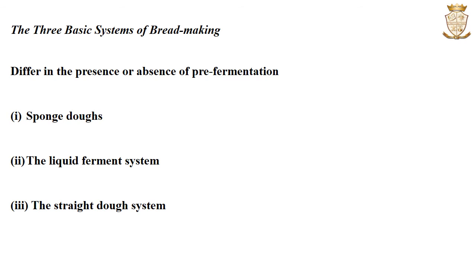Three different systems of bread making are generally used and these systems differ in the presence or absence of the pre-fermentation stage. The different systems are the sponge dough system, the liquid ferment system and the straight dough system.